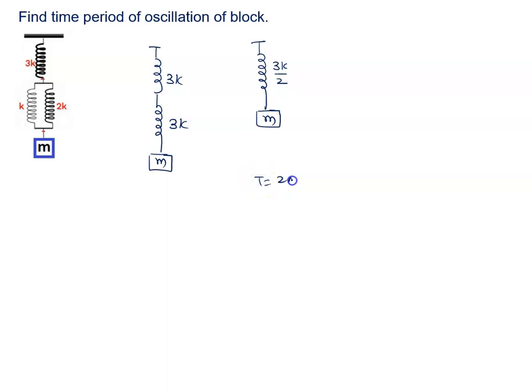So time period formula, how will it be? 2 pi root m by k. k is how will it be? 3k by 2. So final answer to this problem will be 2 pi root 2m by 3k.